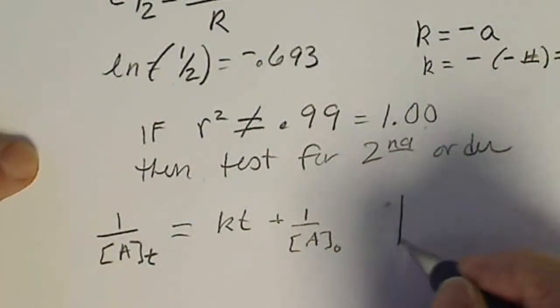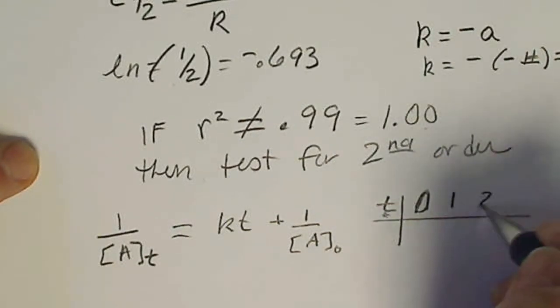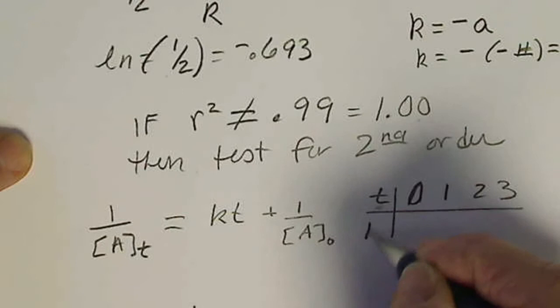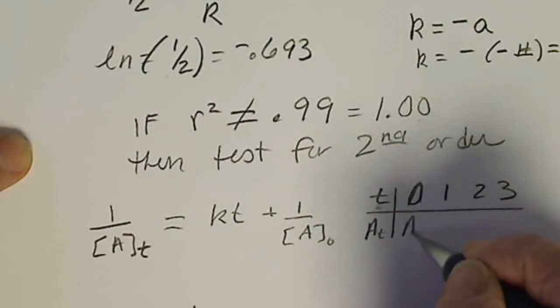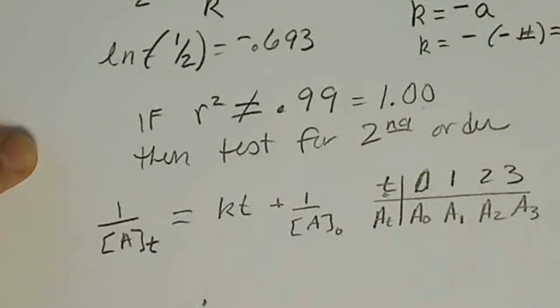So on our data with time 0, 1, 2, and 3, and our A values given A naught, A at the first time, A at the second time, A at the third time.